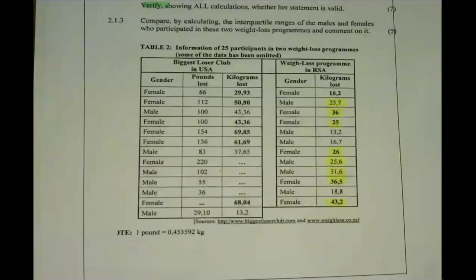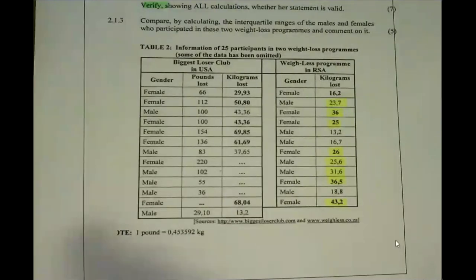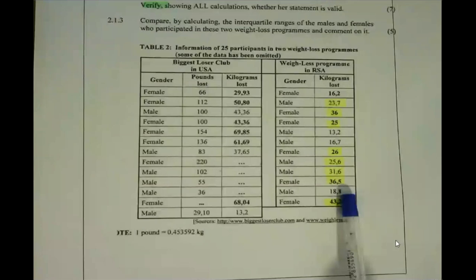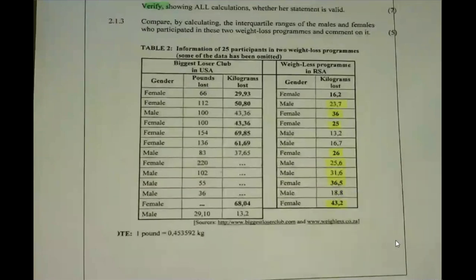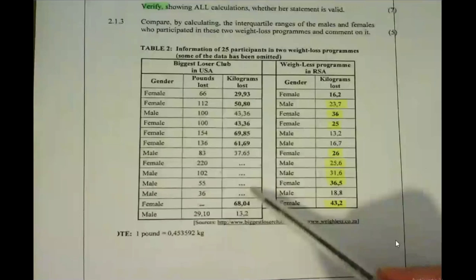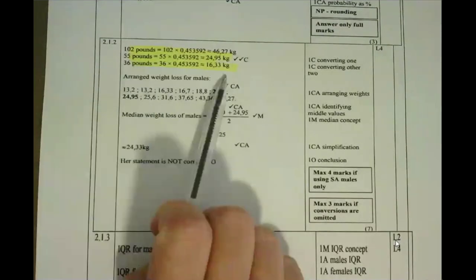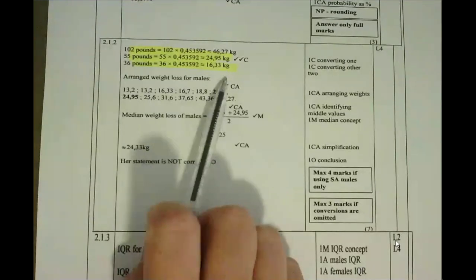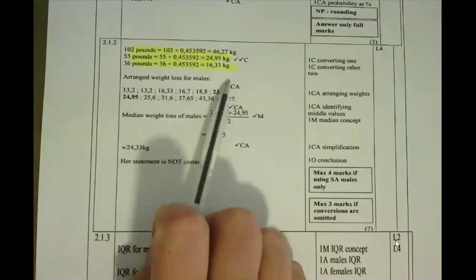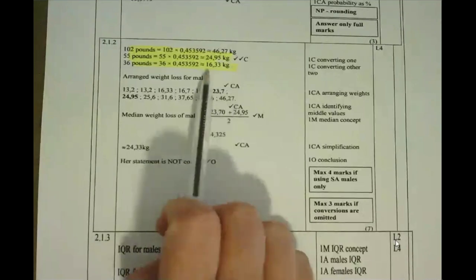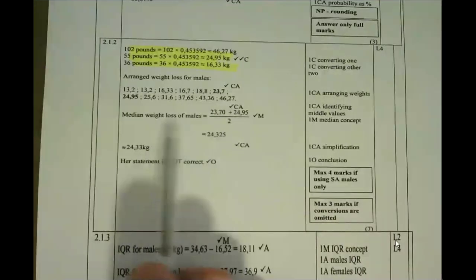The question is specifically asking for all the males, so we can get all the male values from our table. There are male values present, but some values were not given and had to be worked out. I've gone and converted those three missing values. Remember there are four values missing from the table, but one is female so we don't need to convert that one. Now that I've converted the three values, I can work out the median weight loss.